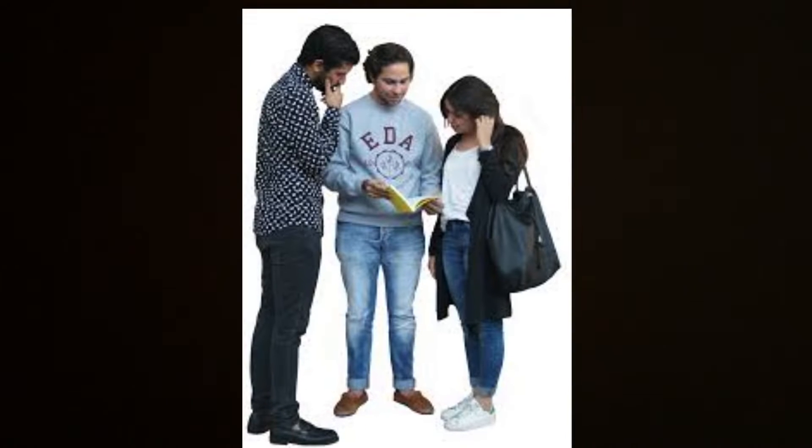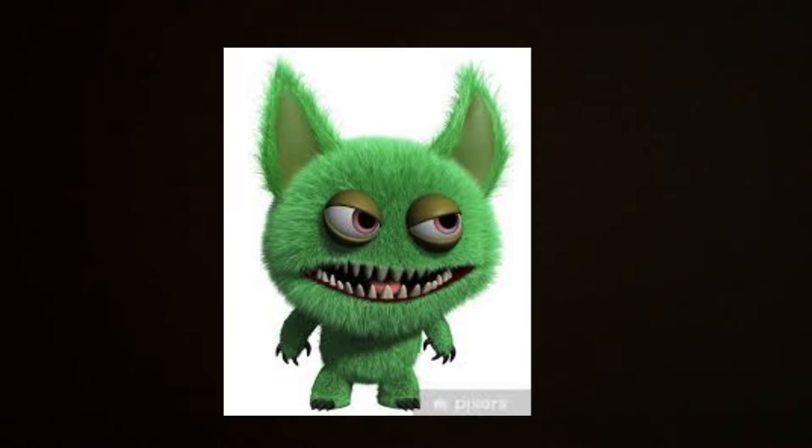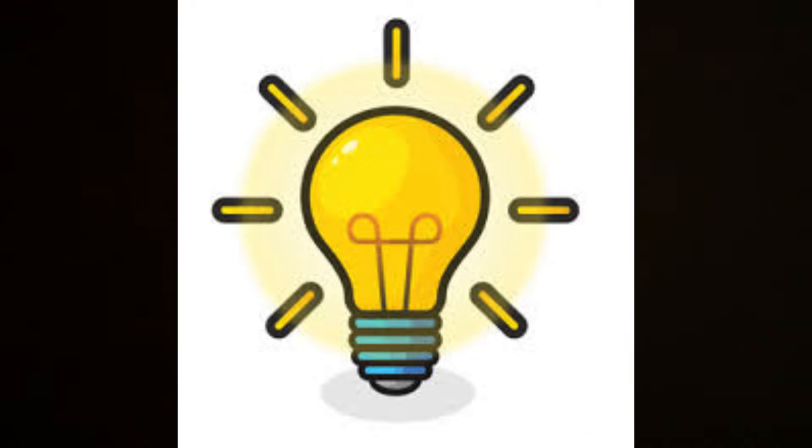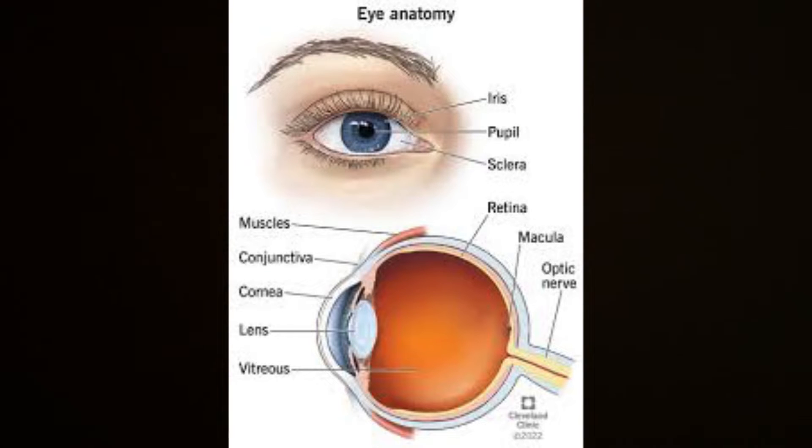Light is something we use every single day, but there are some things lurking in the darkness you may not know about. Light travels in waves, and the wavelengths are different depending on the type of light — one of the shortest being x-rays, which the human eye cannot see. A combination of all the wavelengths is called white light.